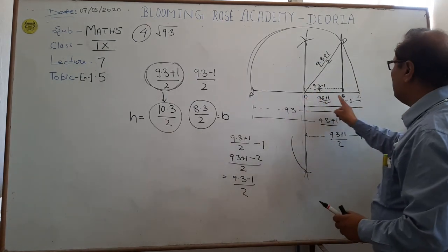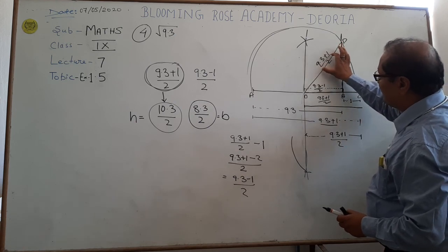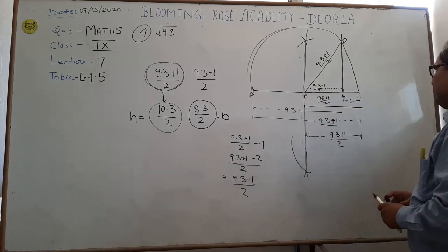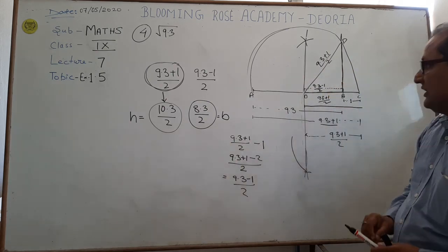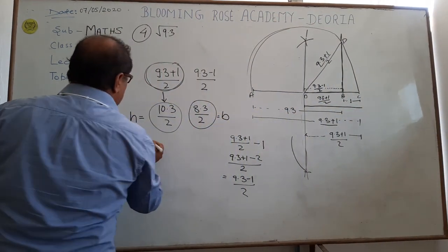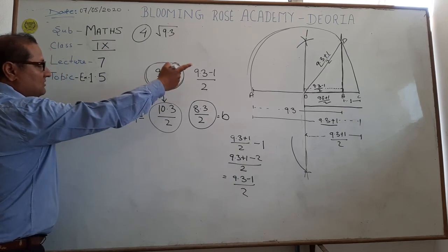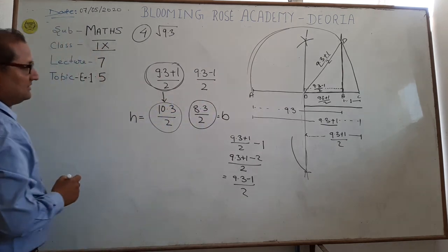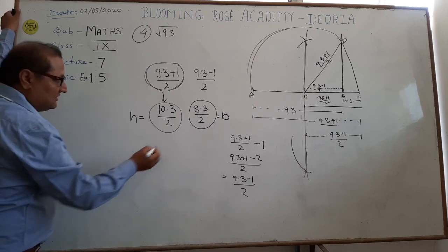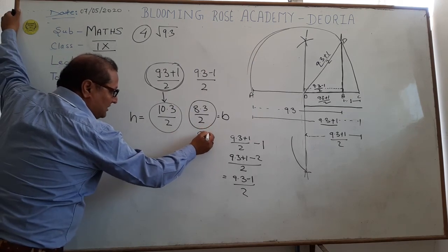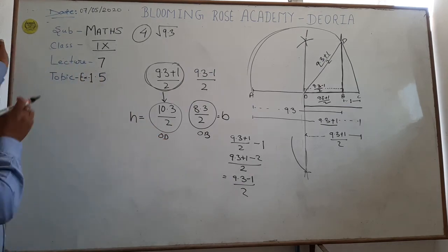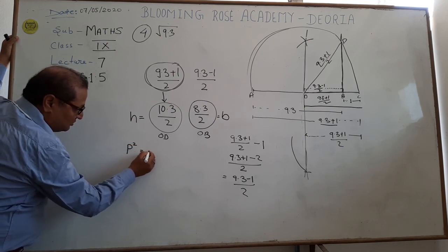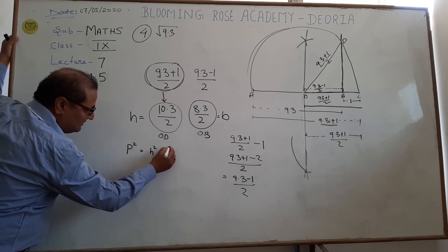The O is the O.D. The hypotenuse is our 9.3 plus 1 by 2 and base is 9.3 minus 1 by 2. As per the Pythagoras theorem, P square is equal to H square minus B square.